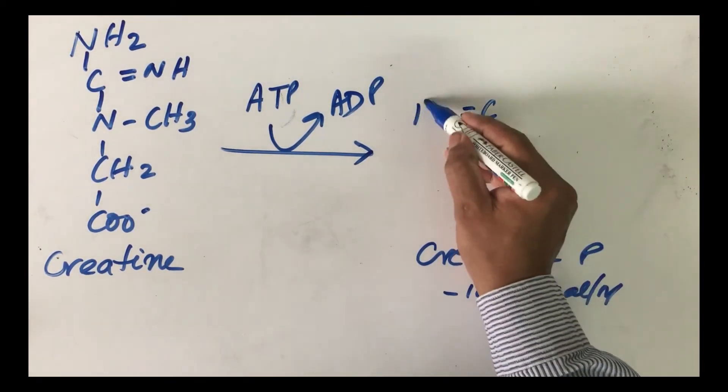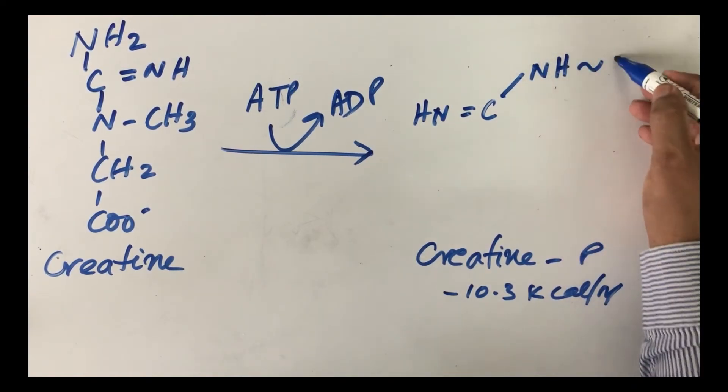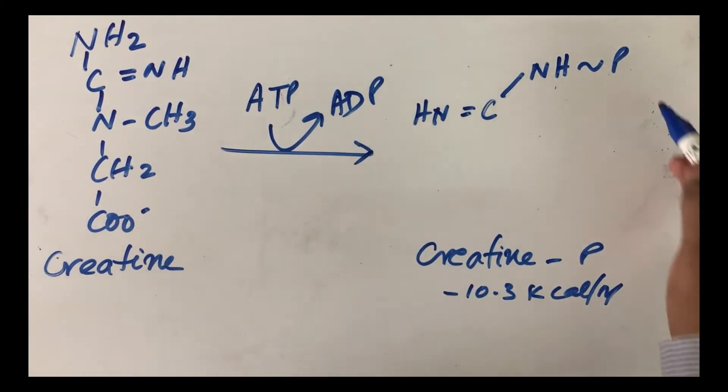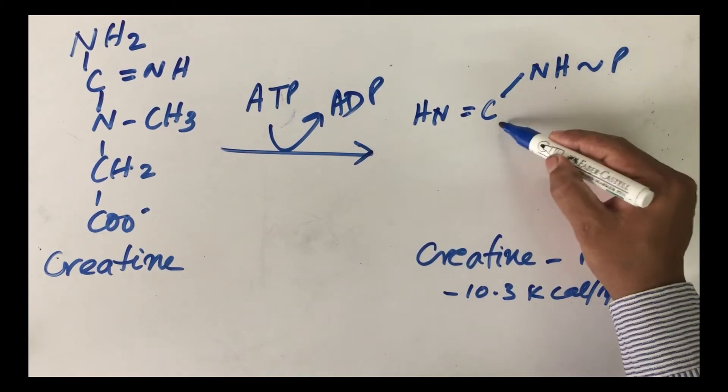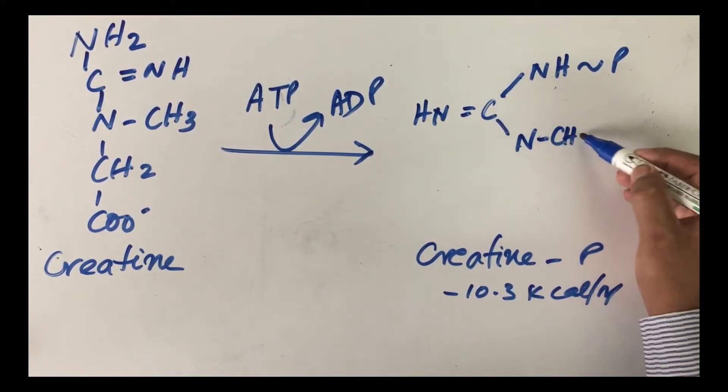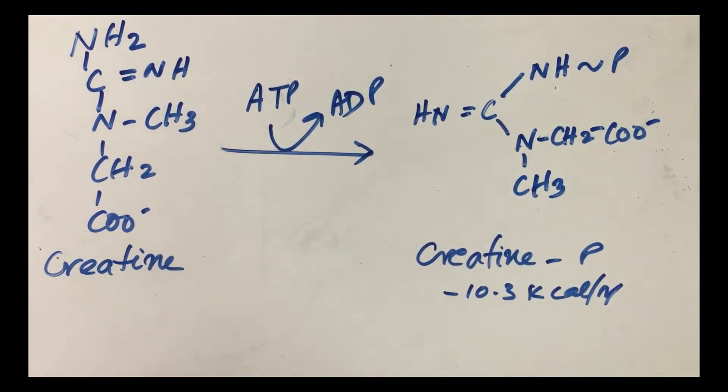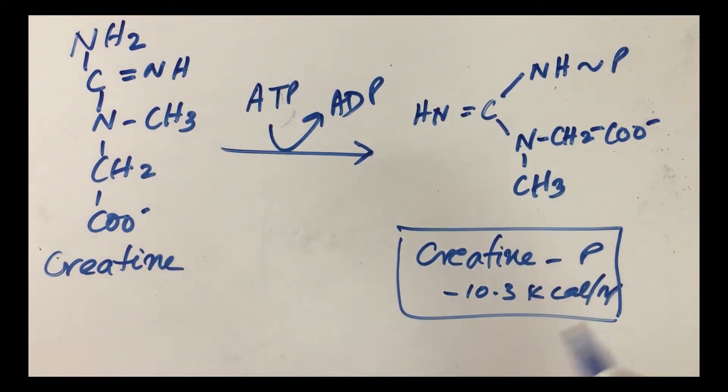What is the structure of creatine phosphate? Remember this squiggle, we put it in order to show that it is conserving energy. This is creatine phosphate. This is how energy is conserved. This will occur in the muscle. Creatine phosphate is stored.